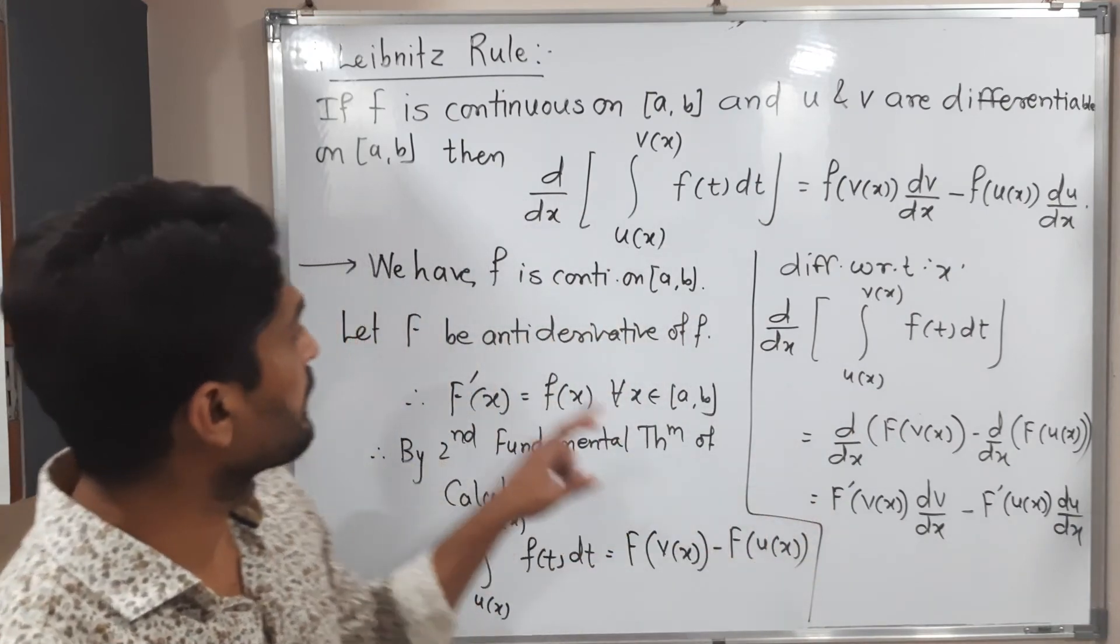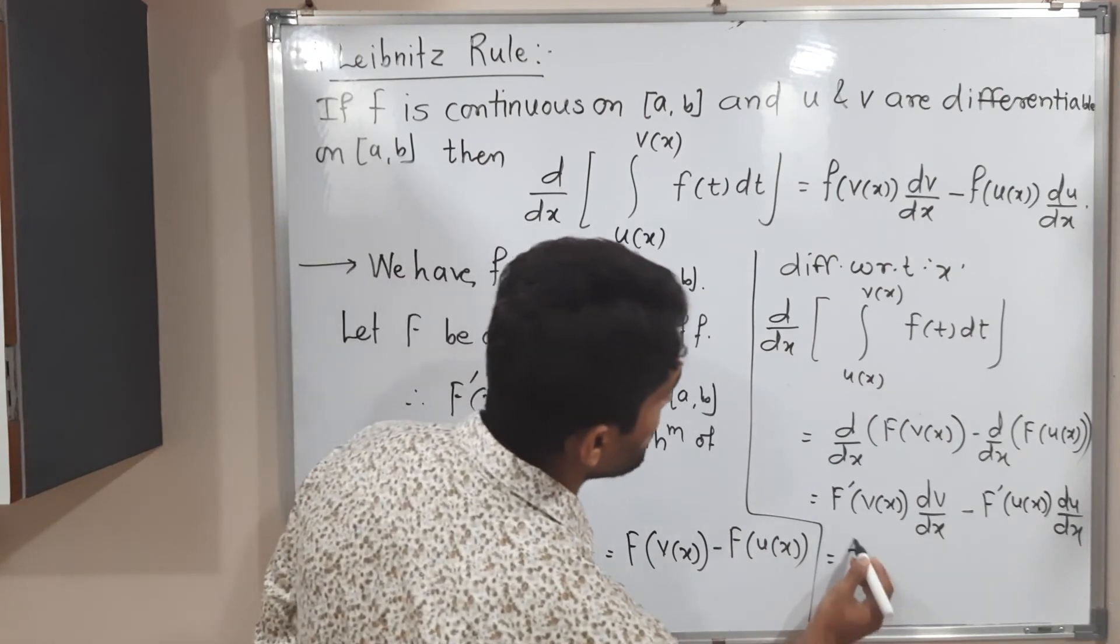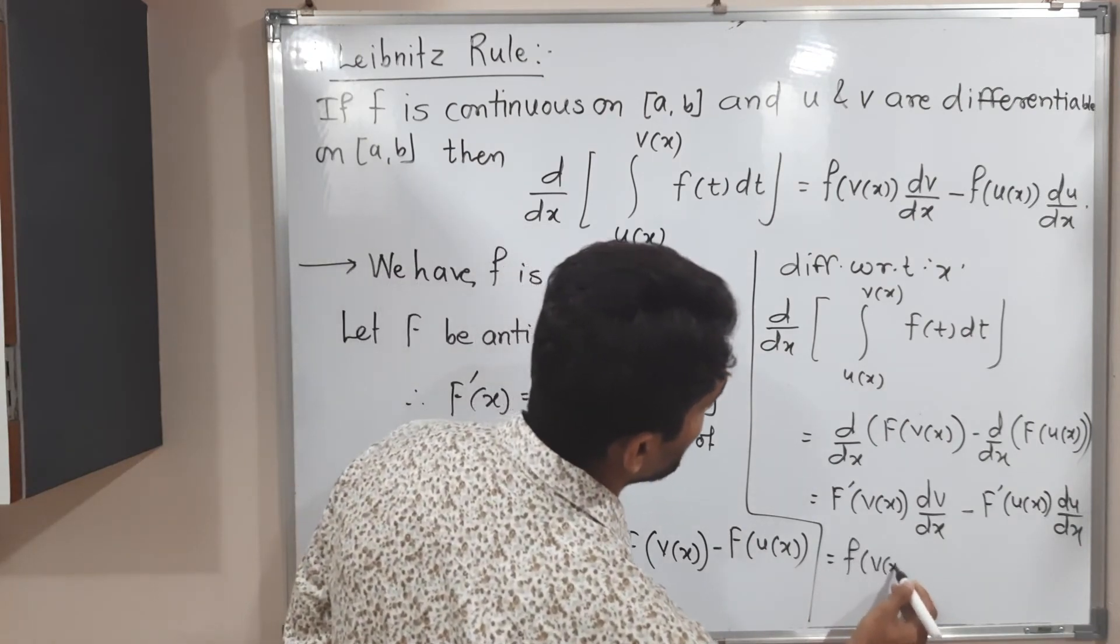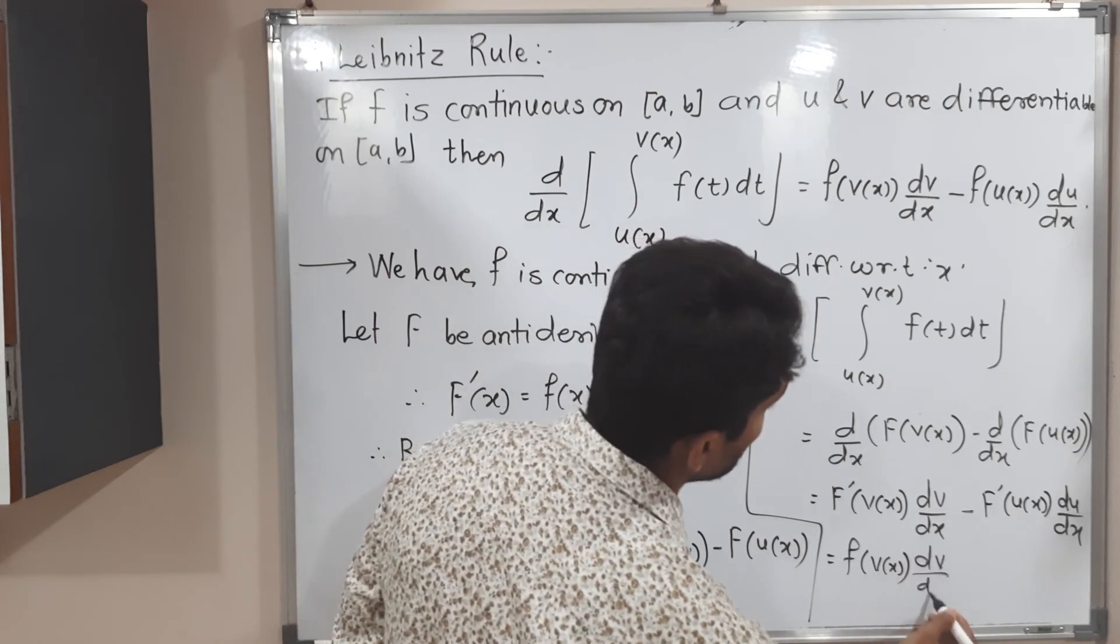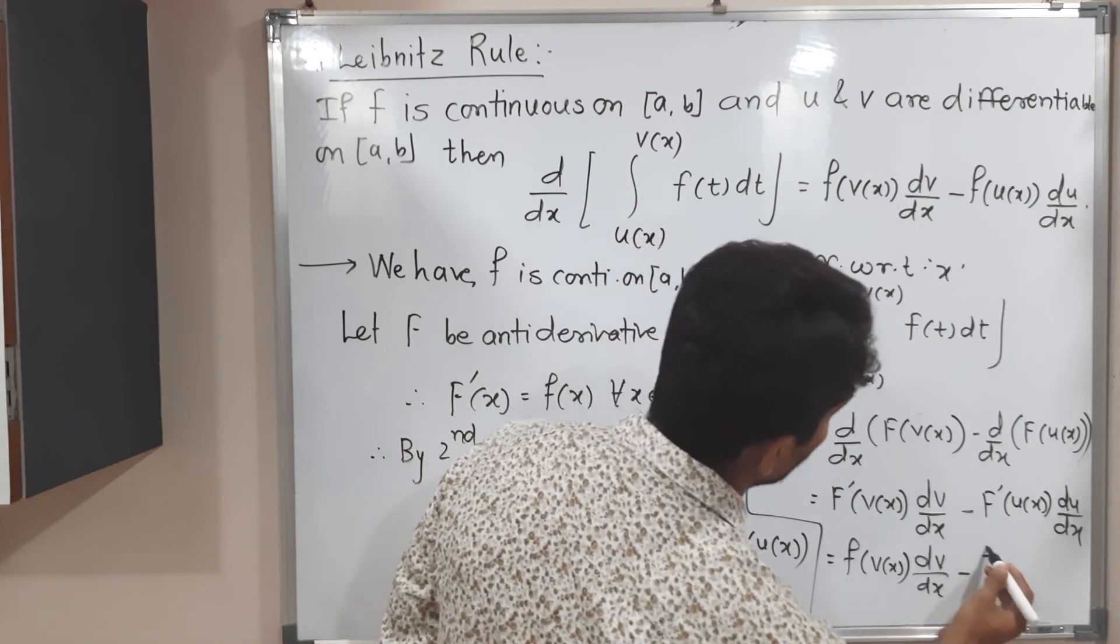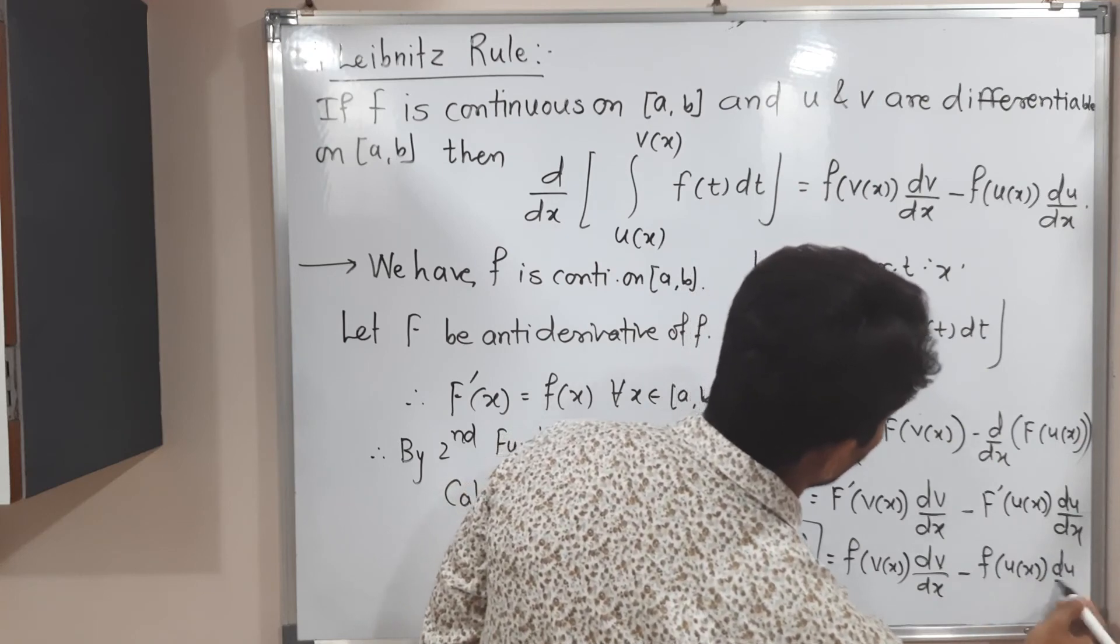But as you know capital F dash is nothing but small f. So therefore we can write it as f of v of x since capital F dash is nothing but small f and dv by dx minus here also I can do the same f of u of x du by dx.